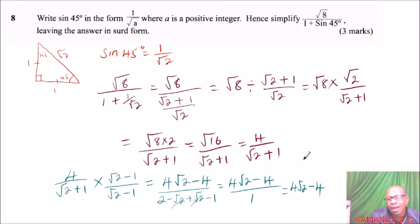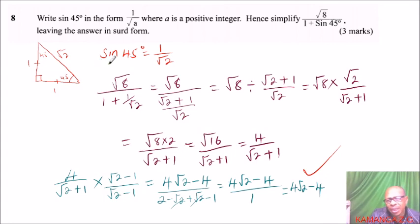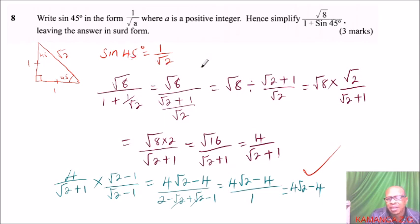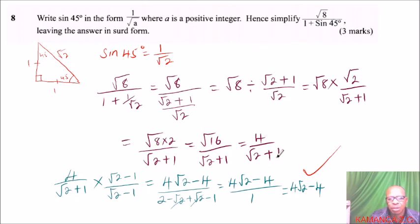And that is how you work out that question. The important thing here is knowing how to express special angles in surd form — special angles are 30, 45, and 60 degrees. From there, you know how to simplify a surd expression, which is what we call rationalizing the denominator. That's how you work out that question.